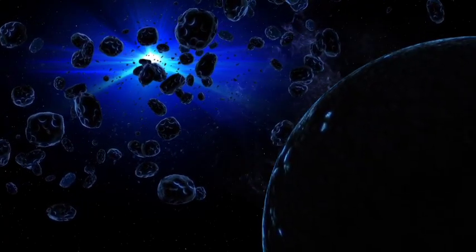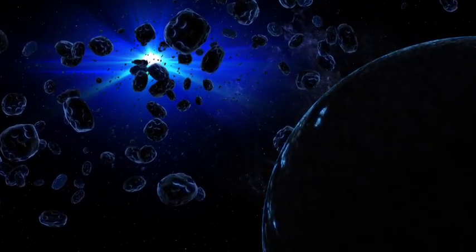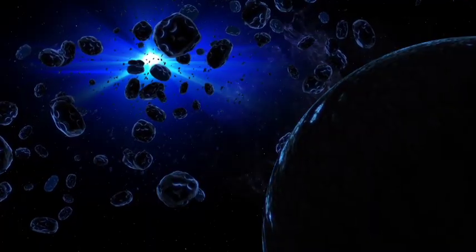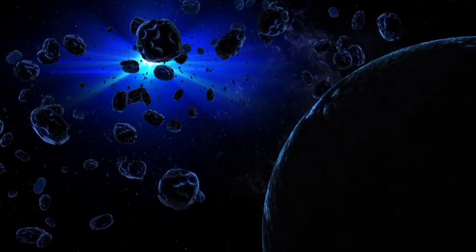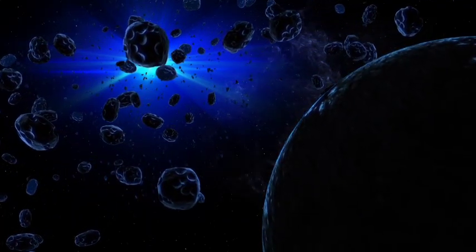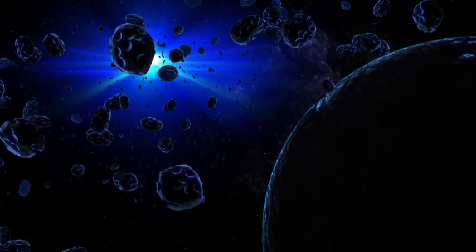Proxima b sits in the habitable zone of its star, where conditions are just right for liquid water to exist. Imagine cascades, streams, lakes, and perhaps oceans as deep and mysterious as the Mariana Trench.